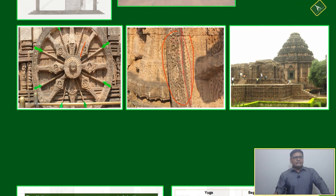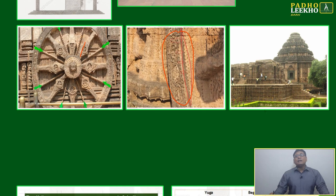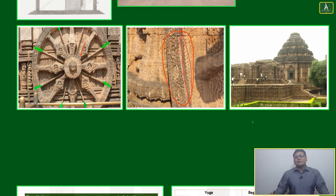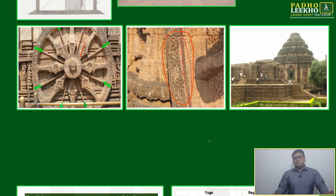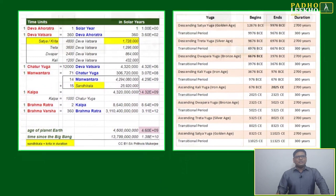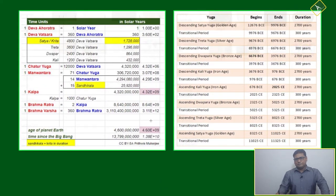Another example of our ancient civilization's measurement of time is the Konark Sun Temple. If you are not aware, it was made for the measurement of time and in devotion to the Sun God, because it is based on the sun that we feel and perceive time.